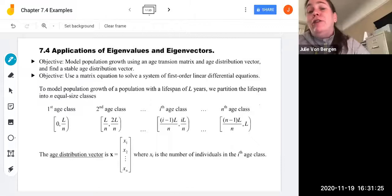So our learning objective for this first video is to model population growth using an age transition matrix and an age distribution vector and find a stable age distribution vector. So we're going to see how we set up population models. And the second learning objective that you'll see in our second video is how to use a matrix equation to solve a system of first order linear differential equations.